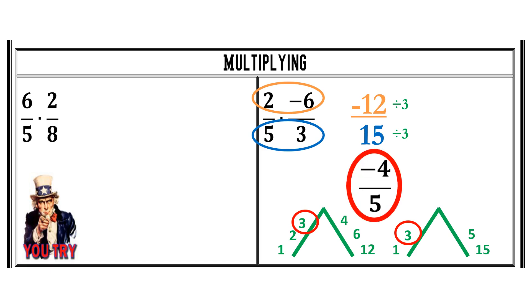On your own, go ahead and try 6/5 times 2/8. Remember, you do not need common denominators. Multiply your numerators, multiply your denominators, and then simplify.